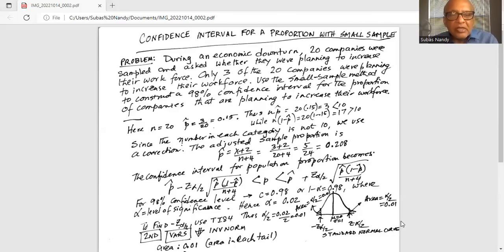While n times 1 minus p-hat is 20 multiplied by 0.85, which is 17, which is greater than 10. Since the number in each category is not 10, we saw n times p-hat is 3, which is less than 10.